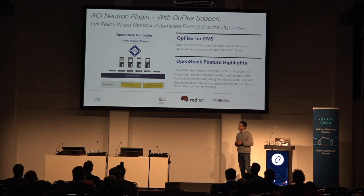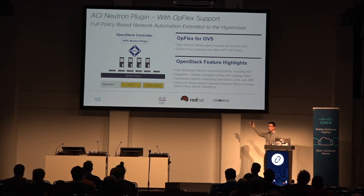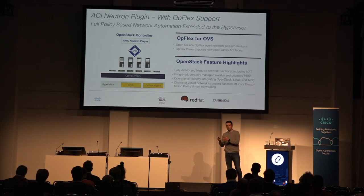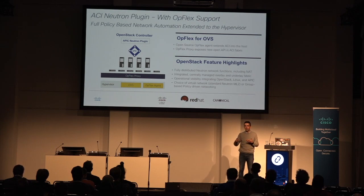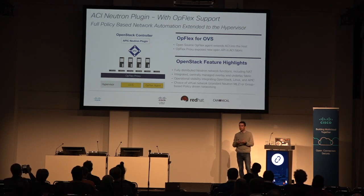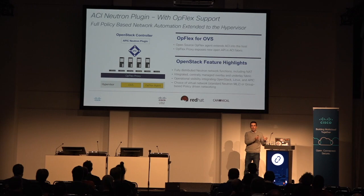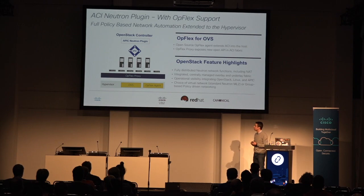The ACI solution works with multiple OpenStack distributions — specifically our Cisco CVIM solution, Red Hat OSP Director, and Canonical Juju Charms. The installation process for each of these takes care of installing the ACI plugin for you, so there is minimal effort from your standpoint. You'll see mostly the benefits with no pain in terms of installation.